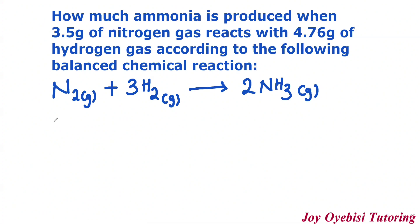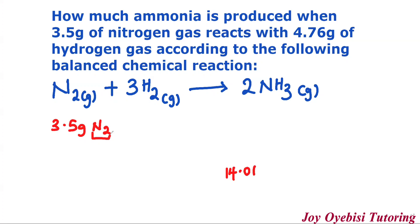So start with 3.5 grams of nitrogen gas. The next step is to convert these grams to moles, and to do that you need the molar mass of nitrogen. To calculate the molar mass, nitrogen has a mass of 14.01. Since it is diatomic, multiply it by two — this gives us 28.02 grams per mole.